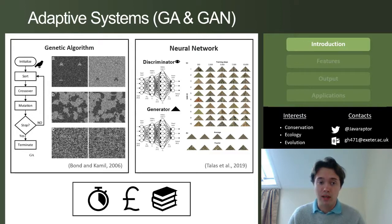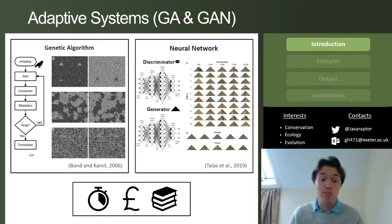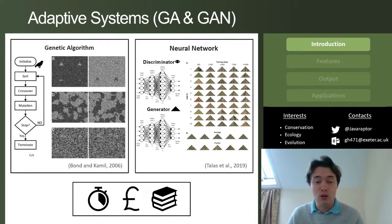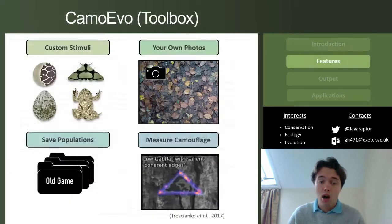It has been done before using genetic algorithms by Bond and Camille to look at the influence of polymorphism on moth coloration, and also in a different method using neural networks by Talis et al. The problem with these systems is that they take quite a long time to run — Bond and Camille ran to 100 generations and neural networks can take thousands of generations and quite costly hardware. They also require quite a lot of reading and understanding of animal patterns in order to set them up.